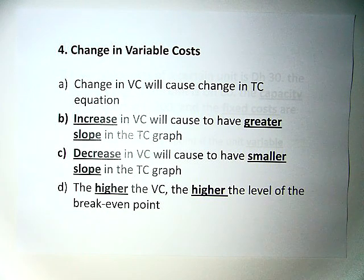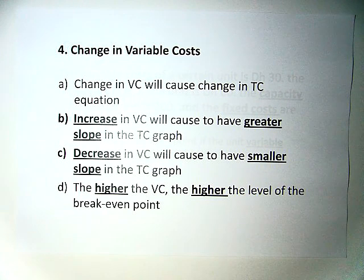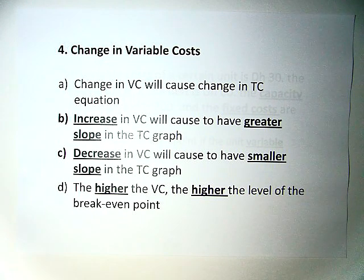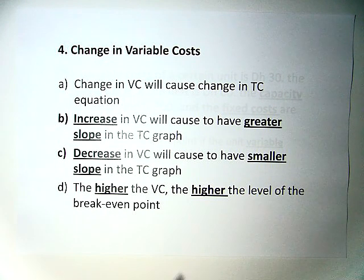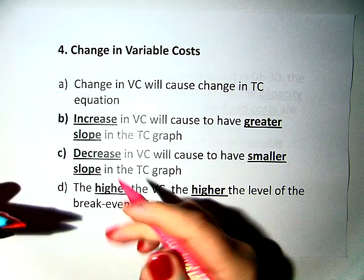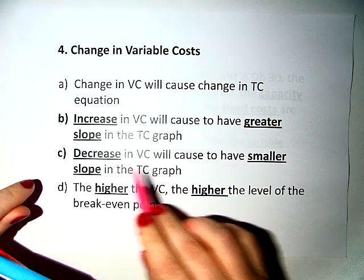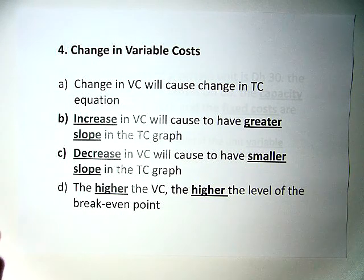The next thing we're going to look at is what to do when you have a change in variable costs. A change in variable costs involves the total cost equation. Remember, this changes the slope. An increase will cause it to have a greater slope, and a decrease will cause it to have a smaller slope.